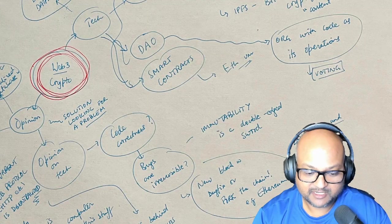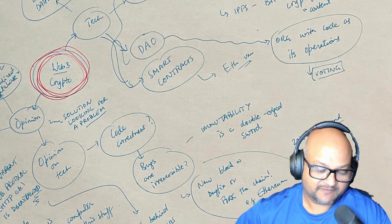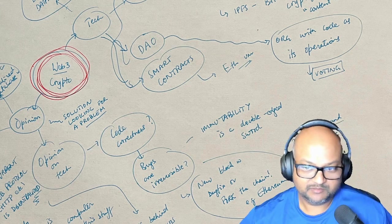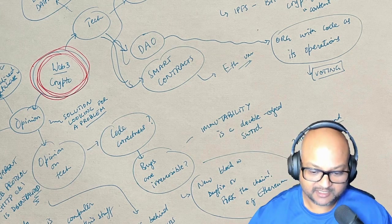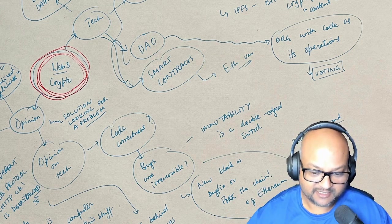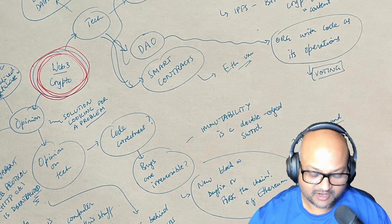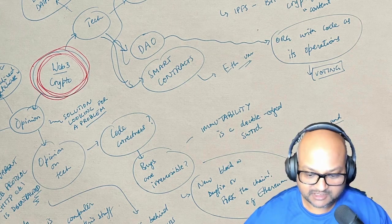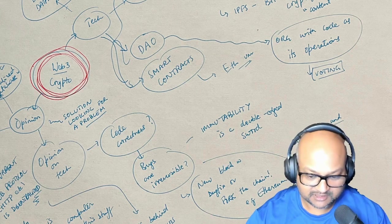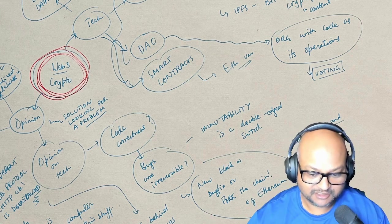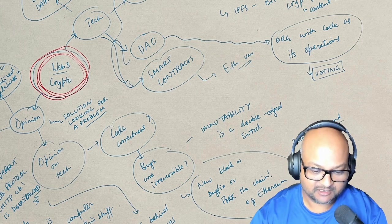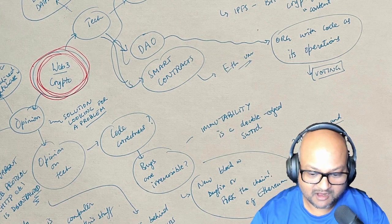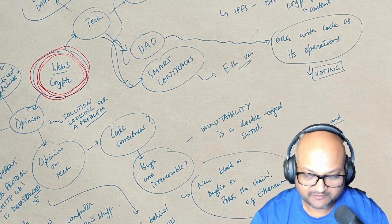My final point has to do with immutability. One of the central advantages that is touted for the blockchain is that it is immutable. Once you have a block in the history of the blockchain, that's it. It is set in stone forever. All the links further down the blockchain only reinforce this old block, and you can't change it. And it's public, so the entire world has a record of it, and you can't change it anymore after the fact. However, immutability is a double-edged sword.